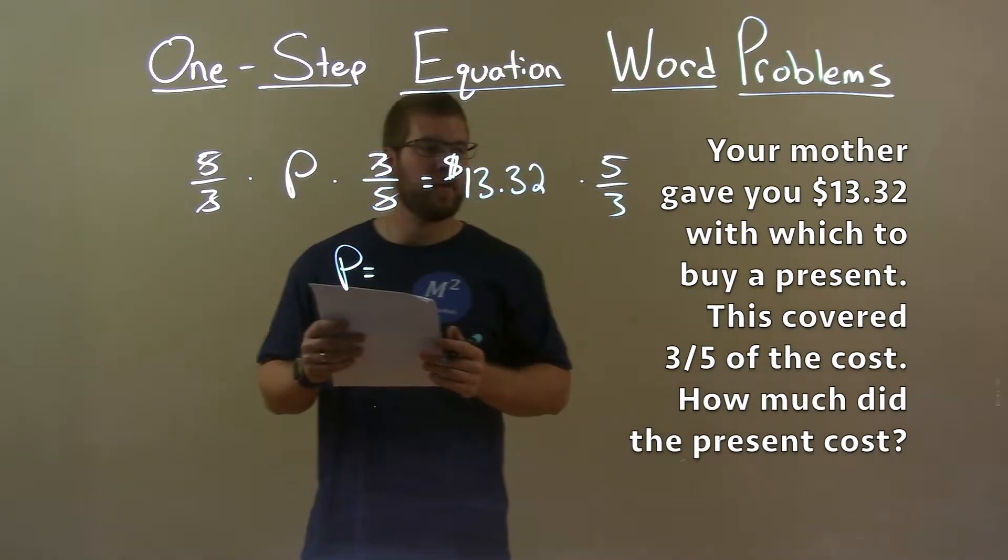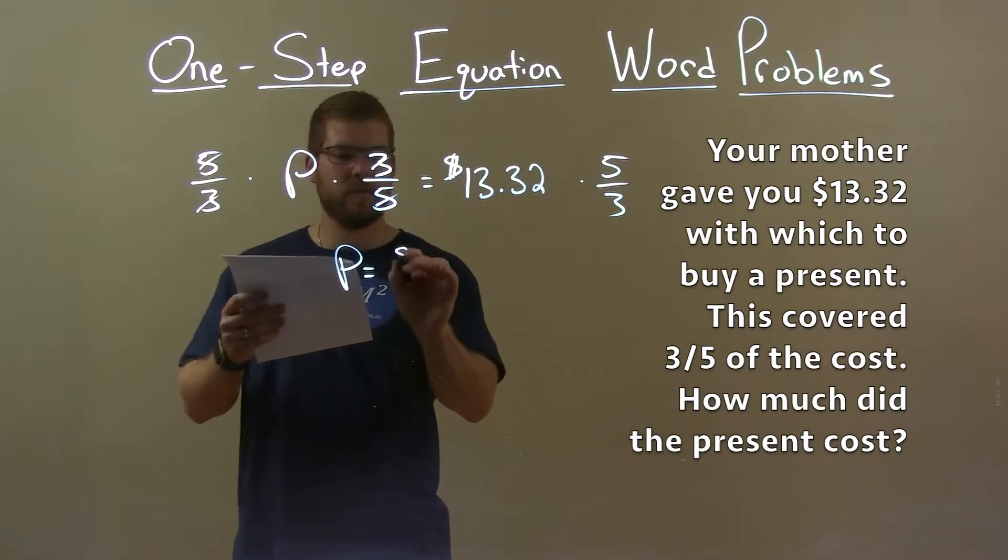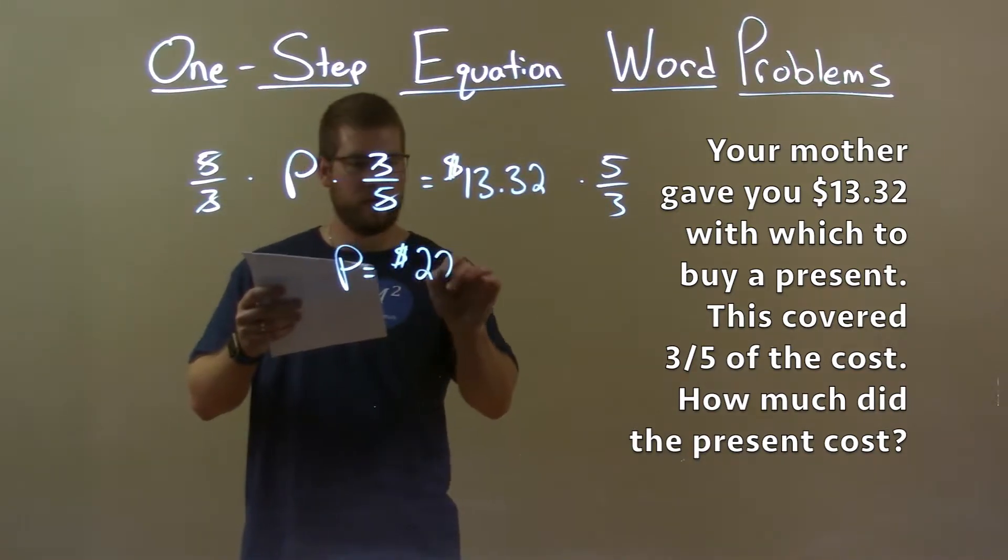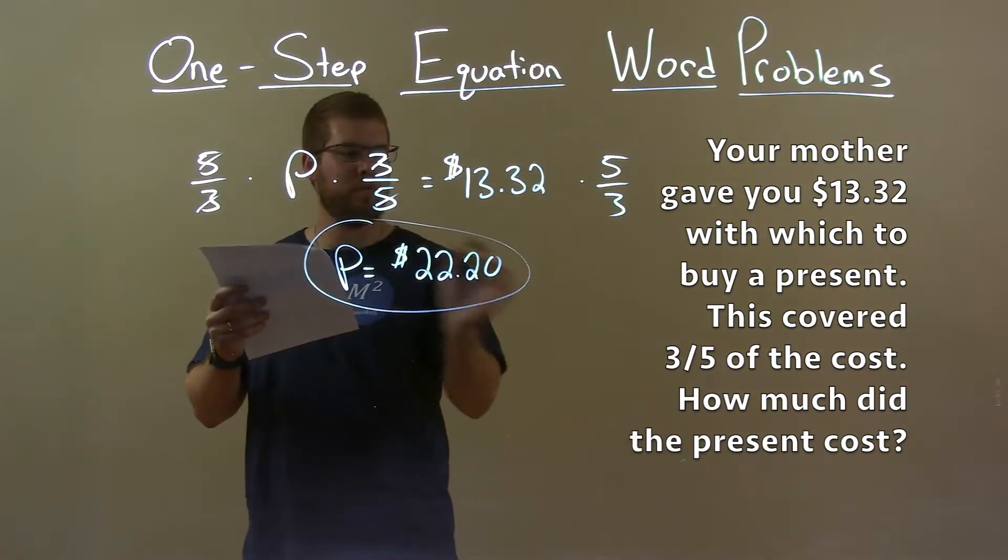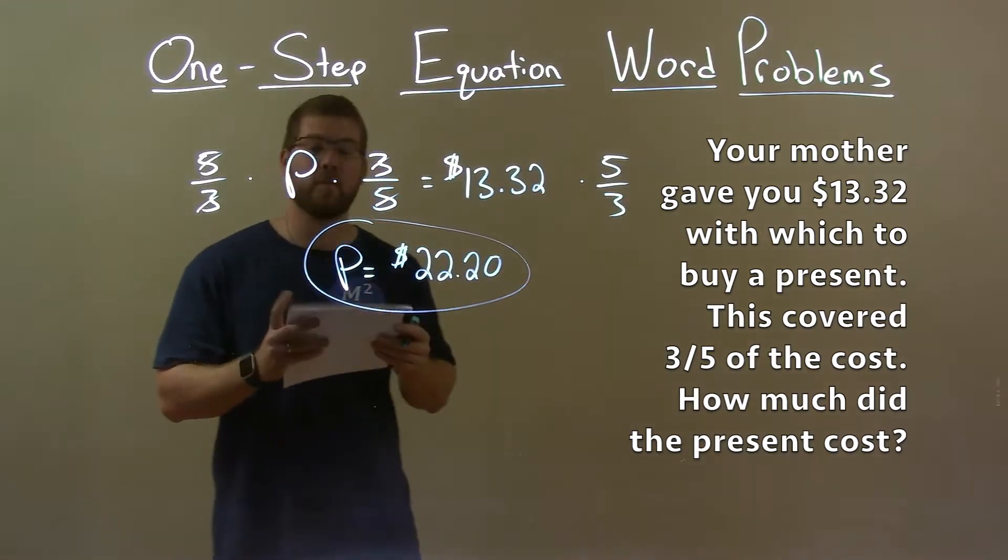$13.32 times five-thirds comes out to be $22.20, which is the cost of the present we found.